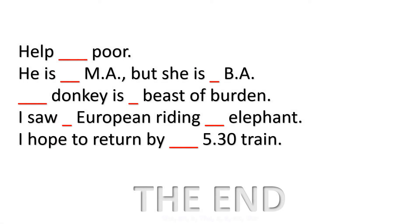So kids, I have told you many rules of articles. Now fill these: 1. He is dash MA, but she is dash BA. 2. Dash donkey is dash beast of burden. 3. I saw dash European riding dash elephant. 4. I hope to return by dash 5:30 train. Okay, bye.